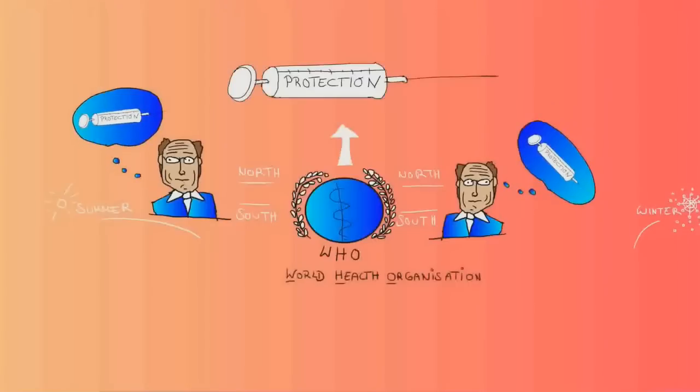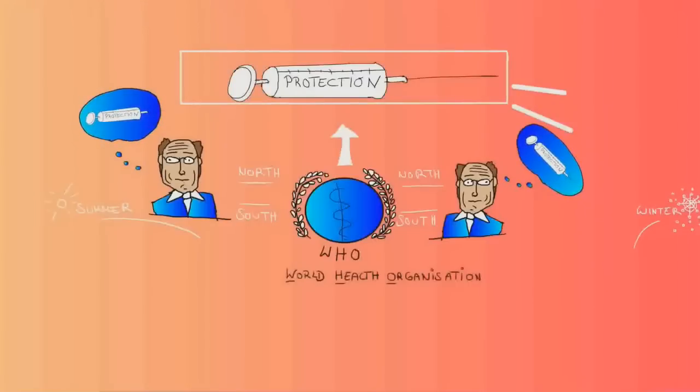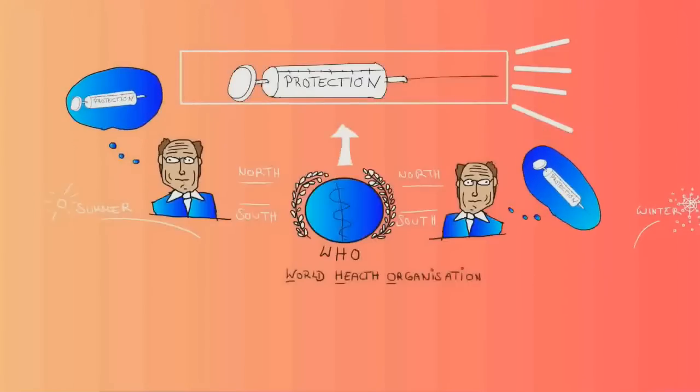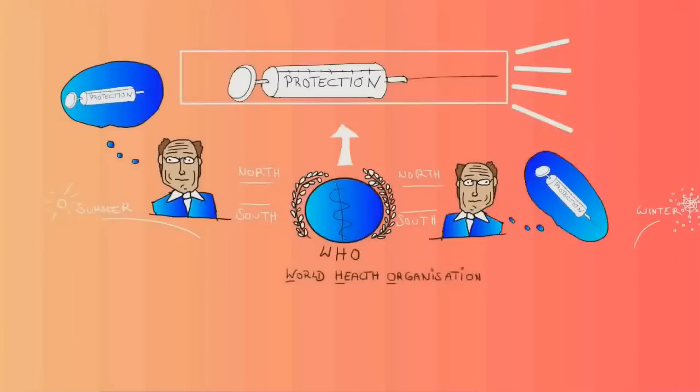The flu vaccine protects against three or sometimes four versions of what the WHO thinks will be the most likely to cause problems that year. Usually, it's two type A viruses and one or two type B viruses. The vaccine is not perfect, but it does a fairly good job to fend off the likely influenza viruses that year.